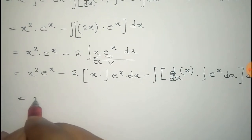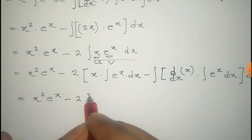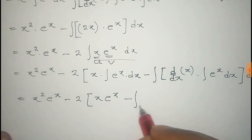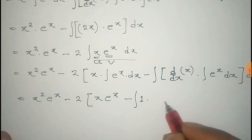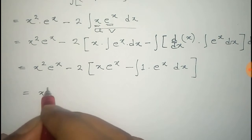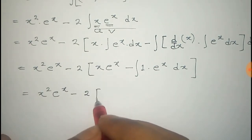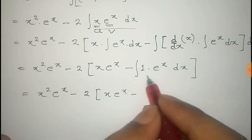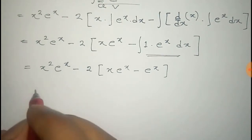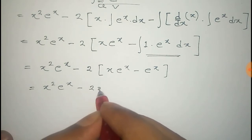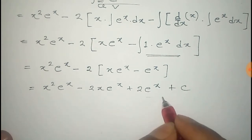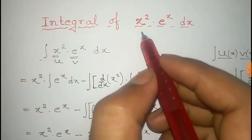That equals x squared e to the power x, minus x times e to the power x, minus the integral where the derivative of x is 1 and the integral of e to the power x is e to the power x. So we get x squared e to the power x minus 2x e to the power x minus 2 times e to the power x. The final answer is x squared e to the power x minus 2x e to the power x plus 2 e to the power x plus the constant of integration C.